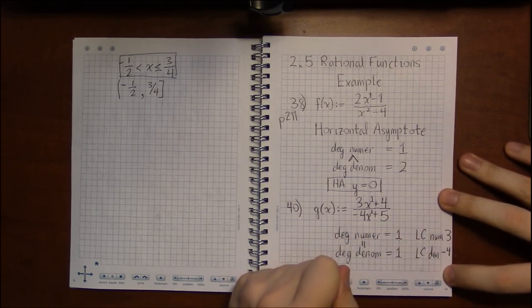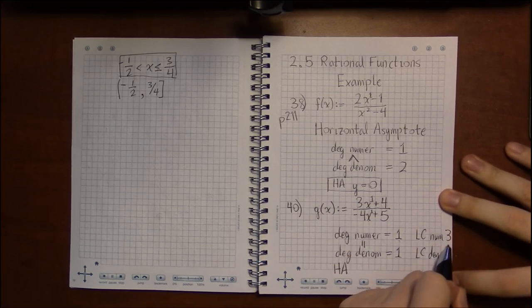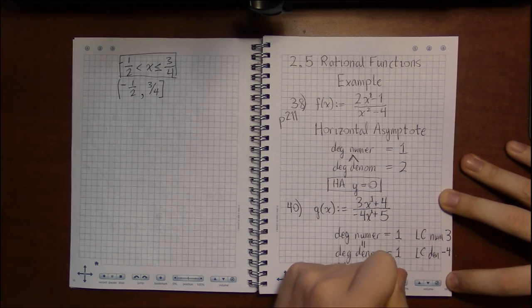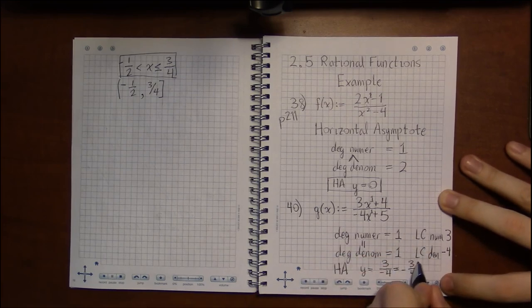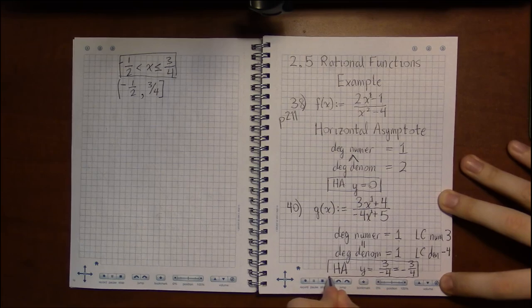So then the horizontal asymptote is just the ratio of these two numbers. I take the 3, and divide it by the minus 4, and get minus 3 quarters. And that, that's the horizontal asymptote for this function.